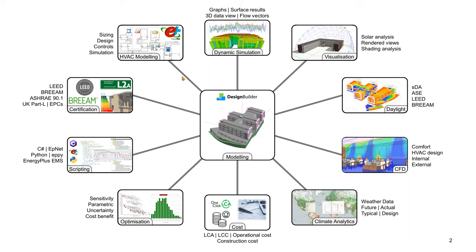Once you've built your geometric model — either by importing it from a BIM tool, via GBXML or IDF import, or by using DesignBuilder's industry-leading geometry tools — you can use that one model to assess energy, comfort and environmental performance, model HVAC system performance in detail, and run a variety of compliance and certification simulations including for LEED, BREEAM, WELL, Green Star, and several other national and regional codes and regulations.